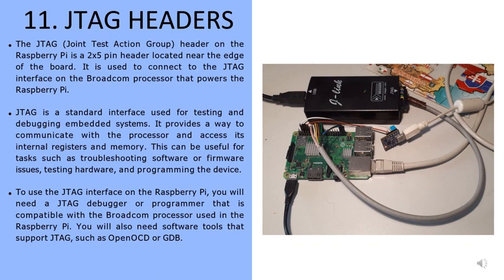The last component is the JTAG header, which stands for Joint Test Action Group. It is a 2x5 pin header located near the edge of the board, used to connect to the JTAG interface on the Broadcom processor that powers the Raspberry Pi. JTAG is a standard interface used for testing and debugging embedded systems, providing a way to communicate with the processor and access its internal registers and memory. This is useful for troubleshooting software or firmware issues, testing hardware, and programming the device. To use the JTAG interface, you will need a JTAG debugger or programmer compatible with the Broadcom processor, along with software tools such as OpenOCD or GDB.